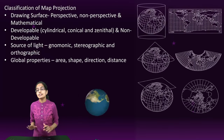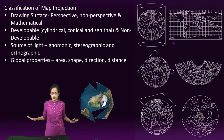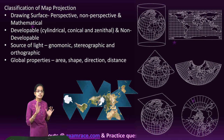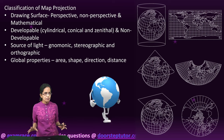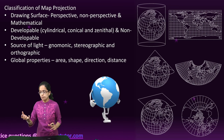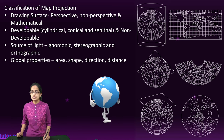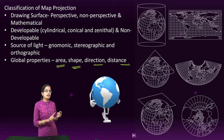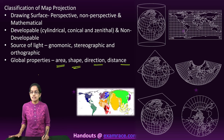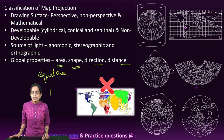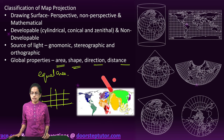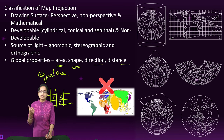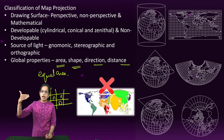We can classify map projection in four ways. The first is global properties. Under global properties, we have area, shape, direction, and distance. When maintaining area, these are called equal area projections — meaning whatever latitudes and longitudes are drawn, the areas of the resulting cells would be equal.